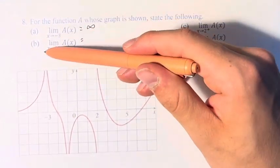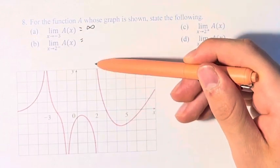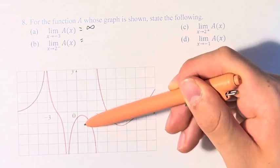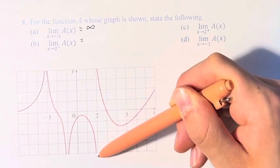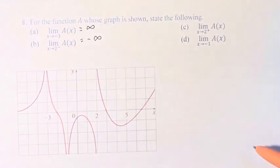In b, we're asked the limit as x approaches 2, and then this minus sign means from the left. So x equals 2 is right here. We're coming at it from the left down here, and it's going off to negative infinity. Therefore, this is equal to negative infinity.